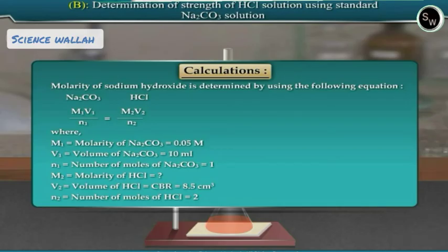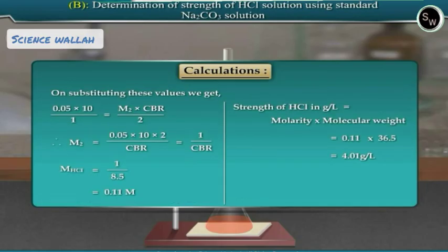n₁ = number of moles of sodium carbonate = 1. M₂ = molarity of hydrochloric acid solution, which is to be determined. V₂ = volume of hydrochloric acid solution = constant burette reading = 8.5 cm³. n₂ = number of moles of hydrochloric acid = 2.